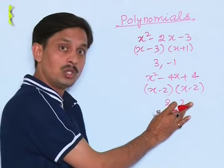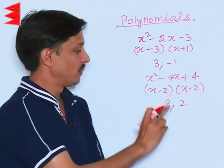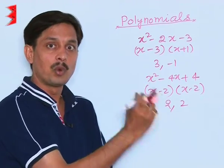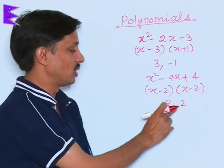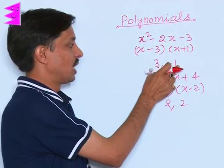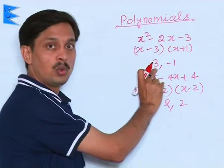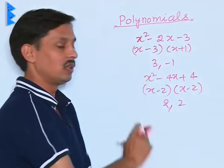So, we cannot say it has only one zero. It has two zeros and the graph of such polynomial always touches the x-axis at the point where it is satisfying the condition of zeros. And the graph of this first type of polynomial will pass through and intersect the x-axis at two distinct points minus 1 and 3.